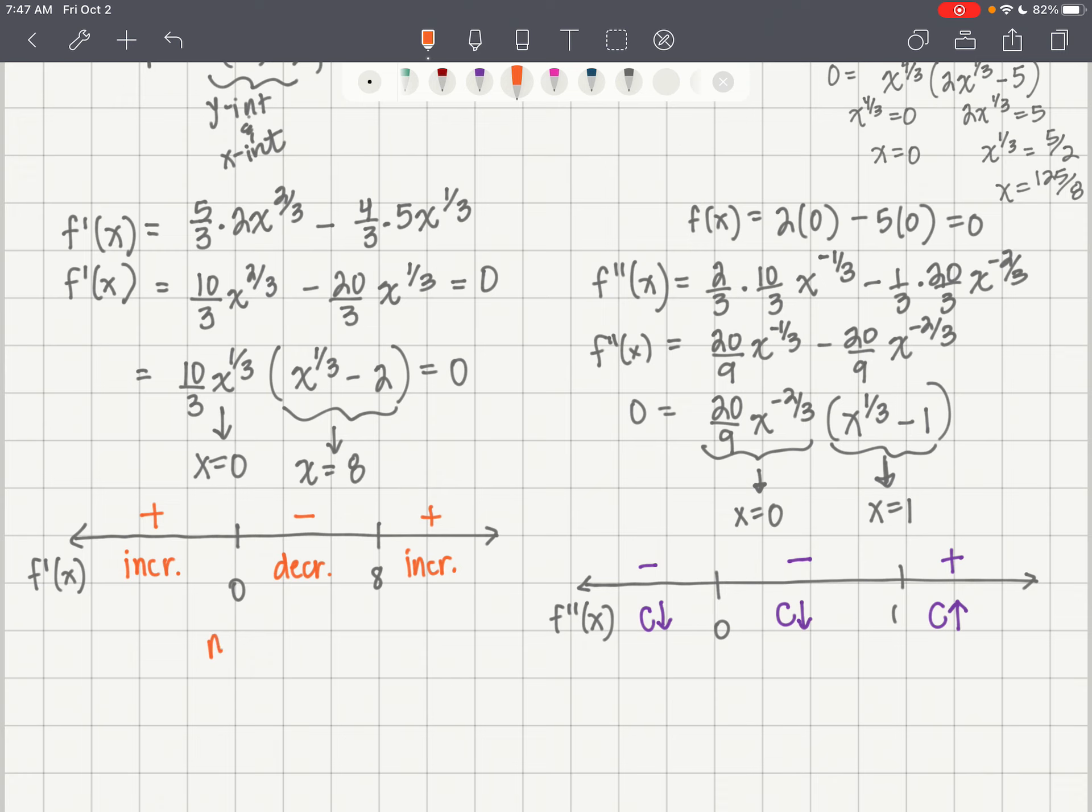So here we have a potential maximum using our first derivative and a minimum. Over here we have a point of inflection when x equals 1. So now we just need to find the corresponding values for those ordered pairs, and we do that in the original function.